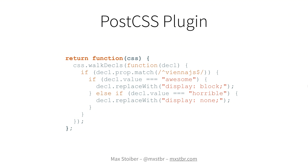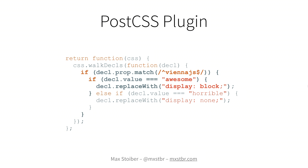You get passed the CSS AST tree as a JSON object in this function, and PostCSS supplies you with a really nice API. You just go css.walkDeclarations and it's like a for loop that goes over every declaration in the entire stylesheet. Now you have access to each declaration, so we match that with Vienna JS, and if the value is awesome we replace it with display block, and if it's horrible we replace it with display none.